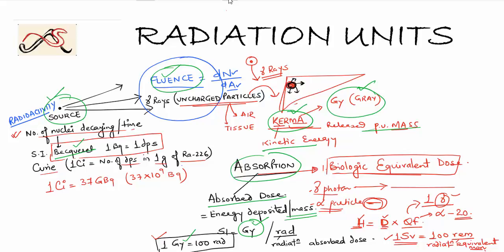Finally, biologic equivalent dose accounts for the fact that different particles deposit energy in different fashions. An alpha particle causes more damage than a gamma photon. Biologic equivalent dose equals absorbed dose multiplied by a quality factor — 1 for a gamma photon and 20 for an alpha particle.